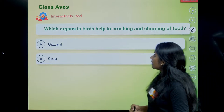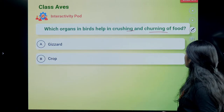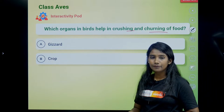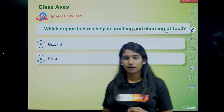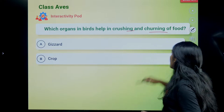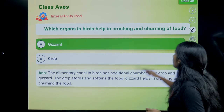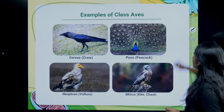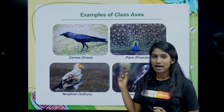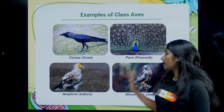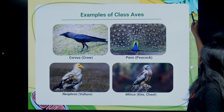The skin of birds is dry without any glands, except the preen (oil) gland at the base of the tail. Bones are spongy and pneumatic. Birds have a four-chambered heart. They possess an alimentary canal with a crop for food storage and a gizzard for food grinding. The respiratory organ is lungs, with air sacs connected to them. The organ that helps in crushing and churning of food is the gizzard — option A.